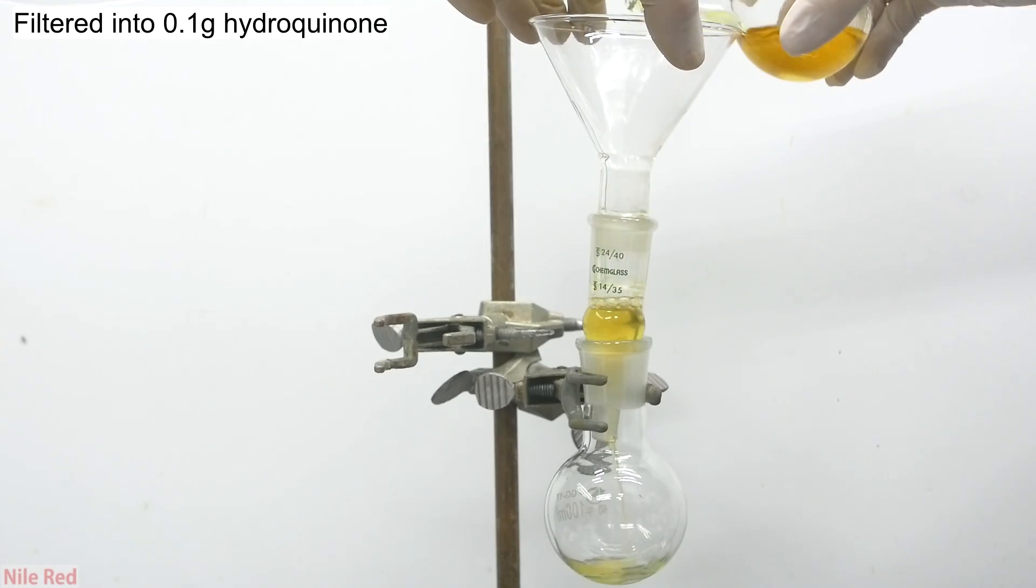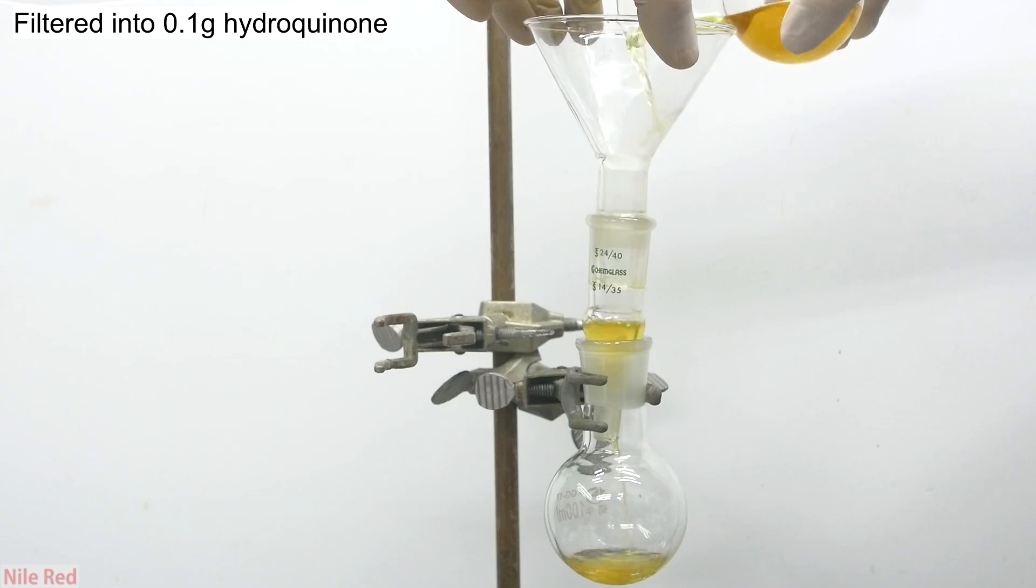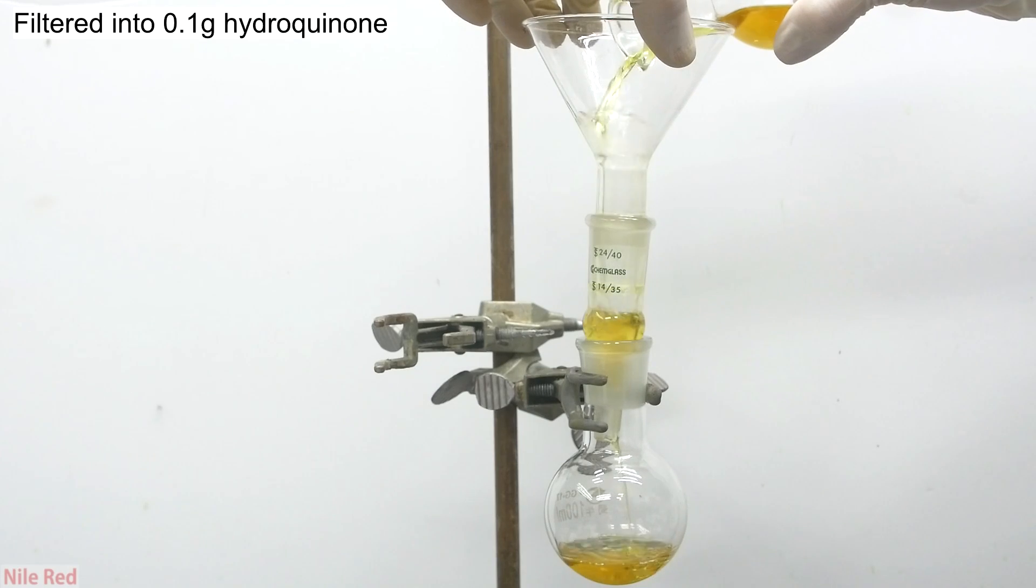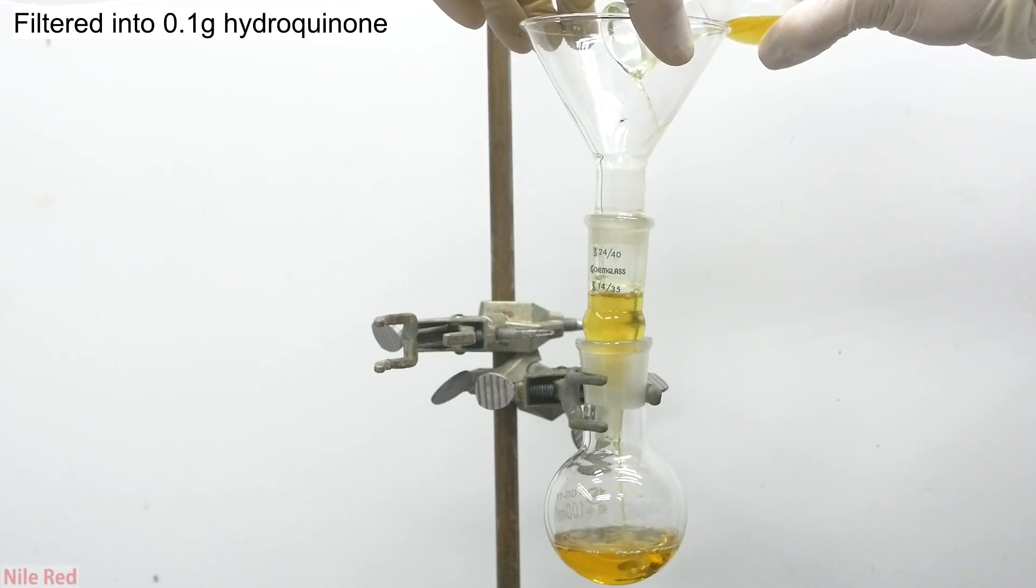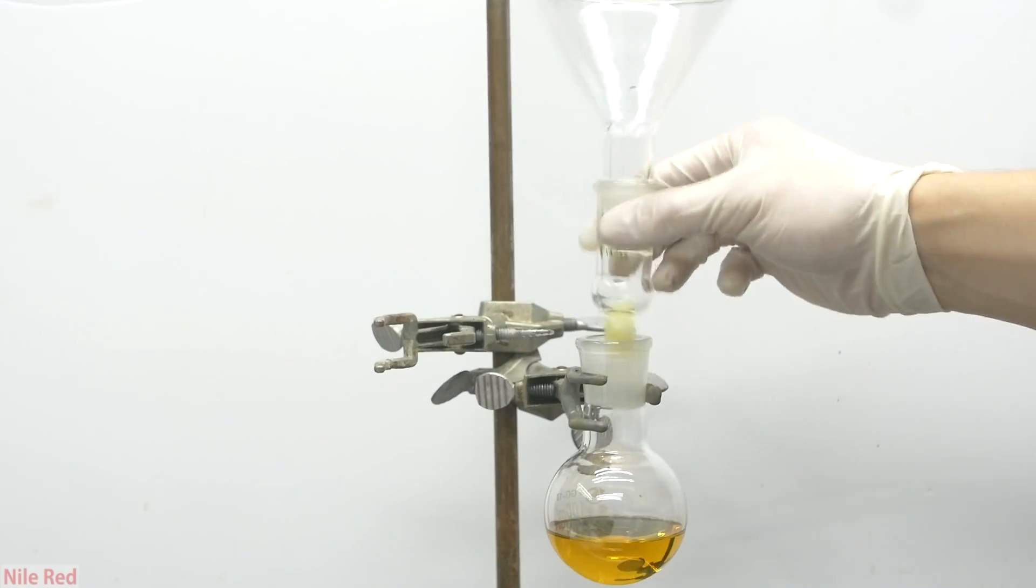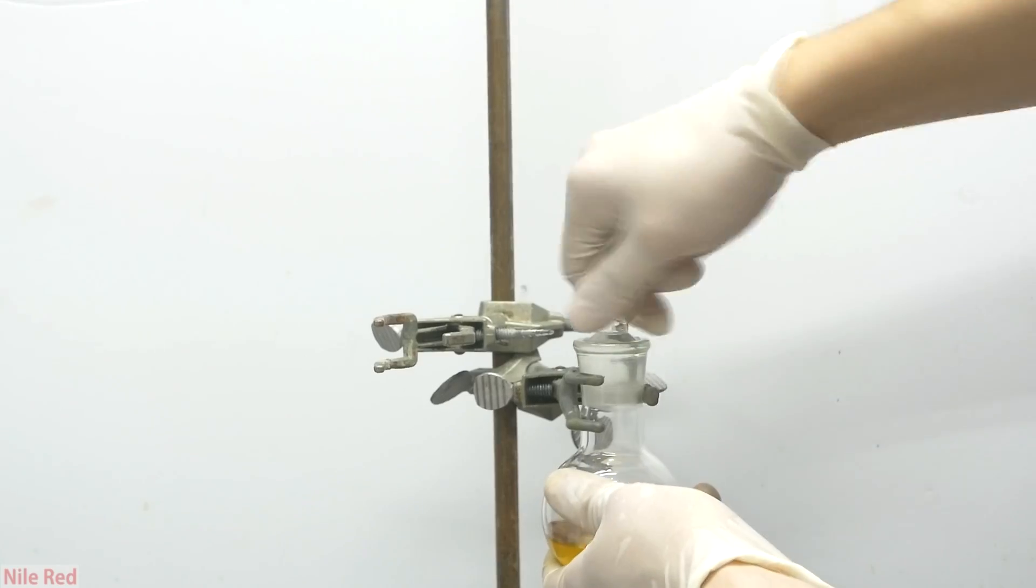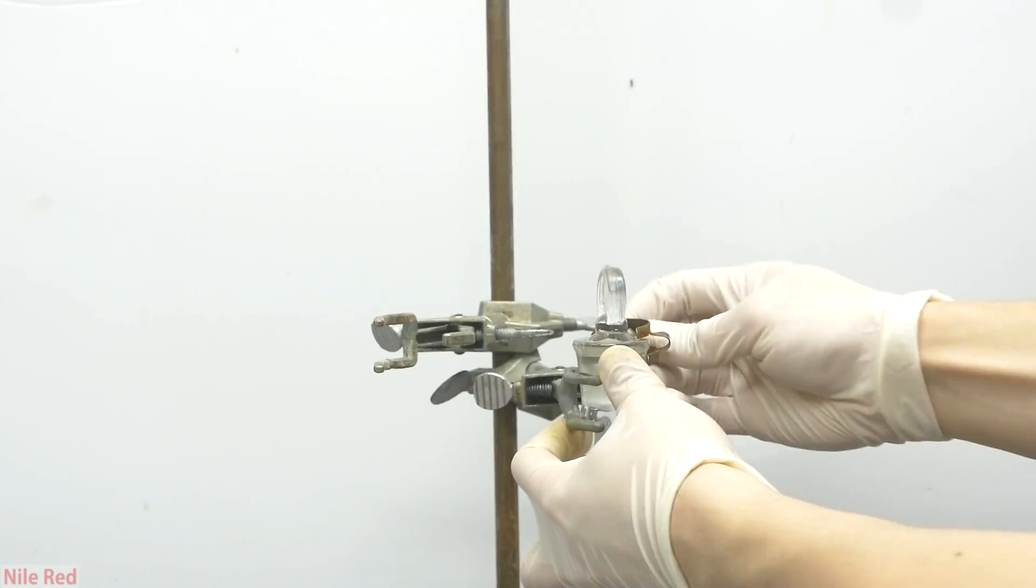So now we move on to our filtering step, where the acrolein is filtered into a flask containing about 0.1 grams of hydroquinone. Hydroquinone is a stabilizer, and it's important to mix it with the acrolein to prevent it from polymerizing. After everything had filtered through, the funnel was removed, and a grease stopper was used to seal the flask.